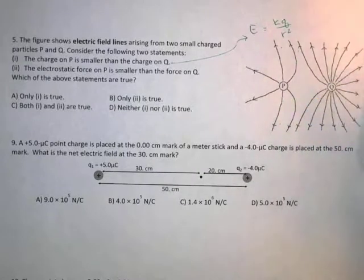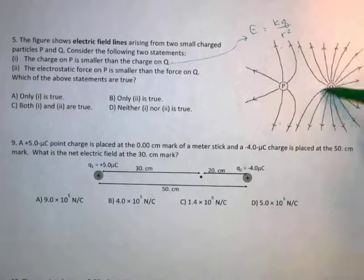Okay, so one is definitely true. We can also, it's not one of the questions, but we can also here tell the sign of the two charges because we know that electric field points away from positive charge. Both P and Q are going to have a positive charge there.